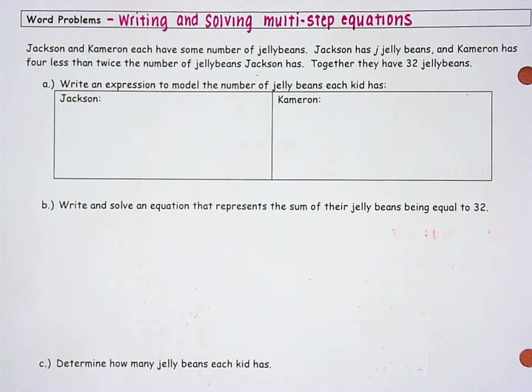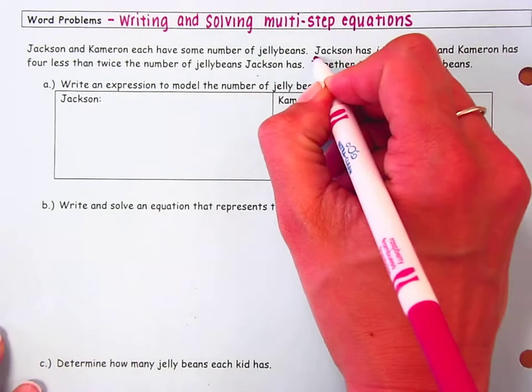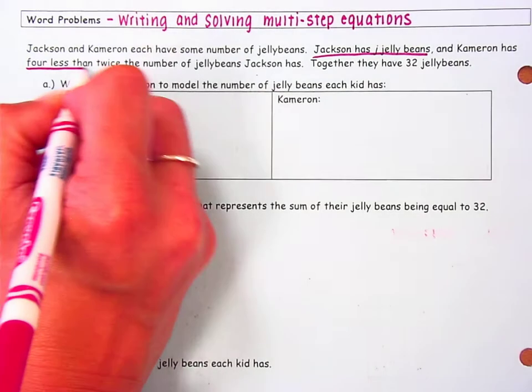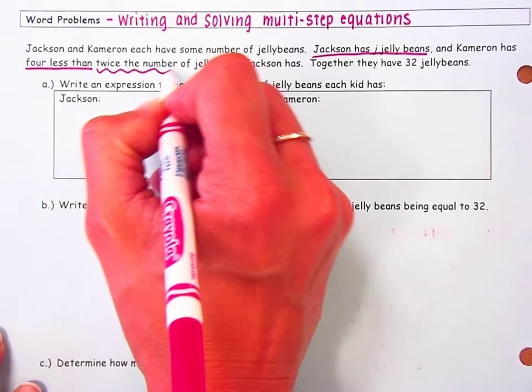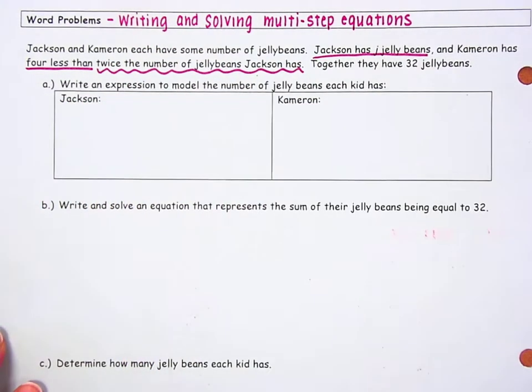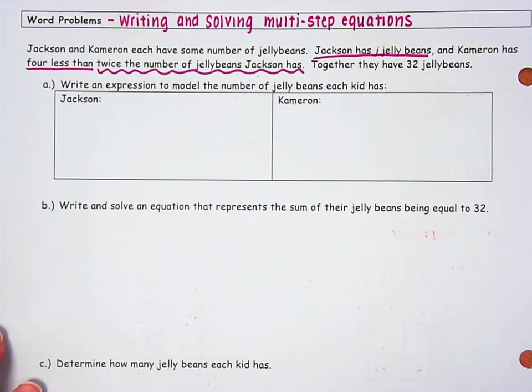Jackson and Cameron each have some number of jelly beans. Jackson has J jelly beans, and Cameron has 4 less than twice the number of jelly beans Jackson has. Together they have 32 jelly beans.